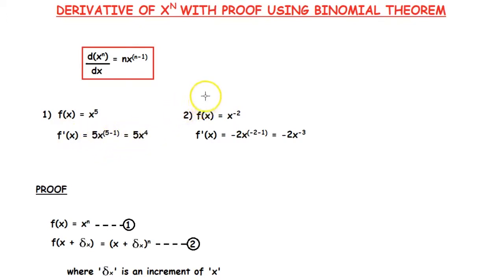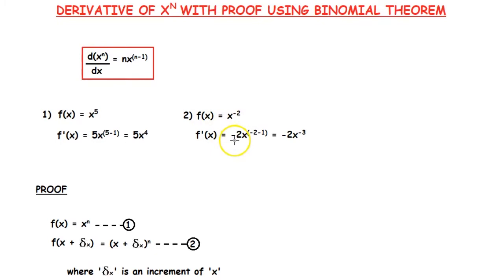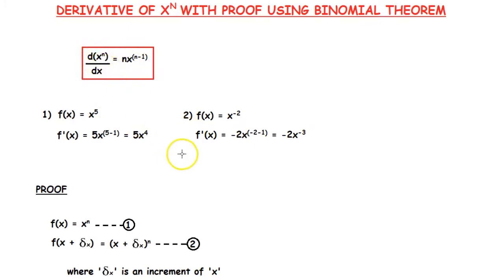We can do this for negative numbers also. Here, if we have f of x is equal to x to the power minus 2, the derivative can be found as minus 2 into x to the power minus 2 minus 1, that is minus 3. So that's how we use this theorem to find the derivative of x to the power n.